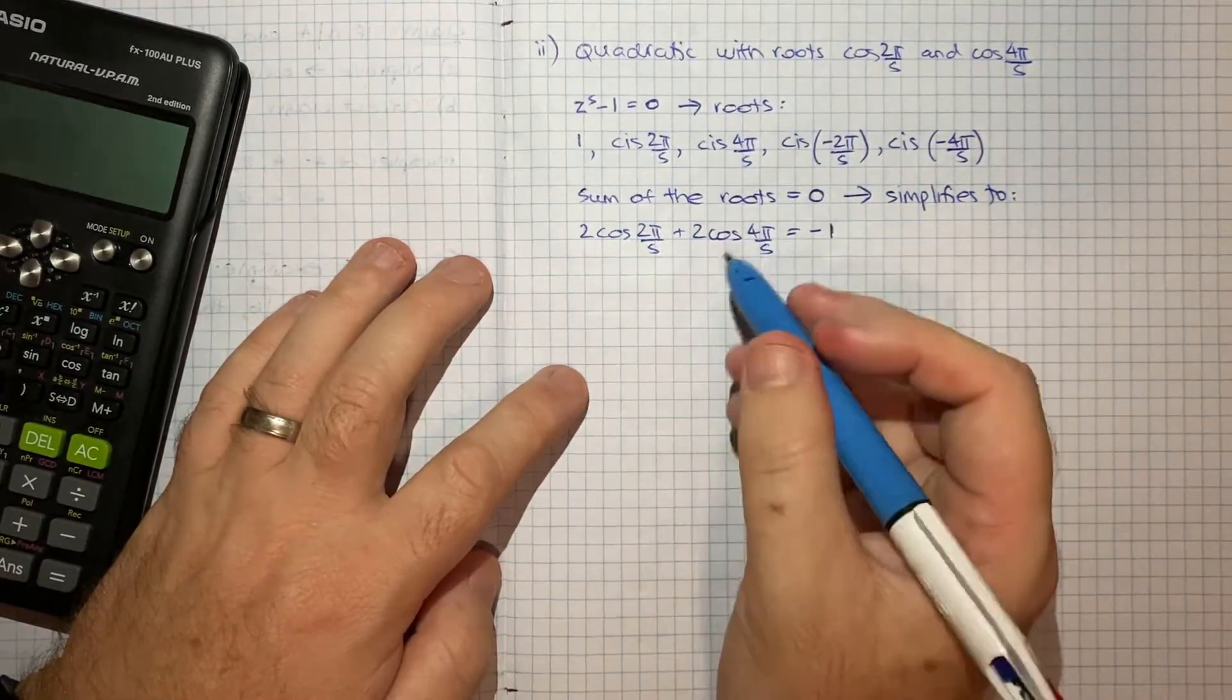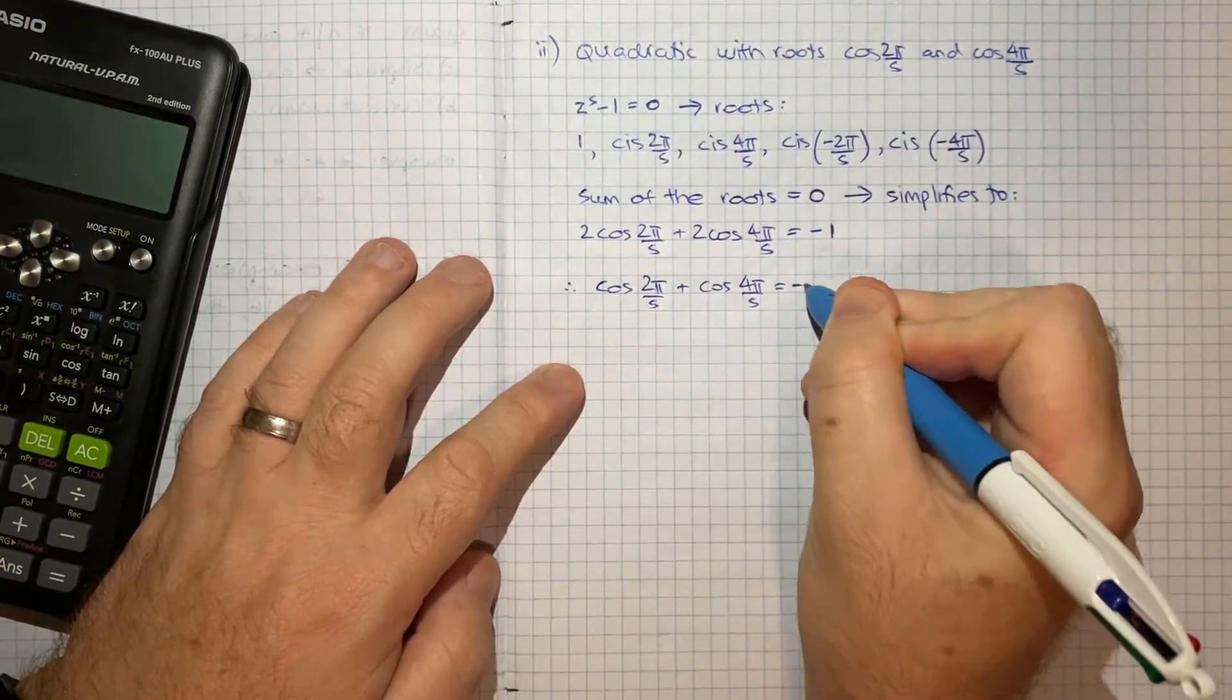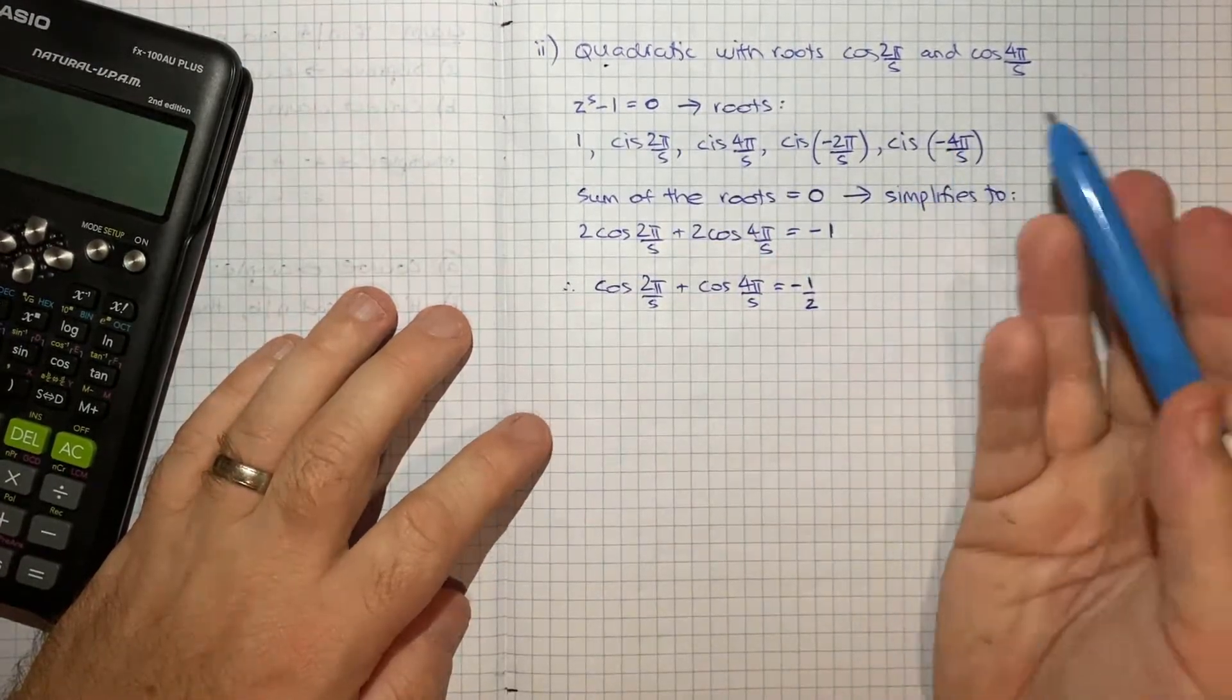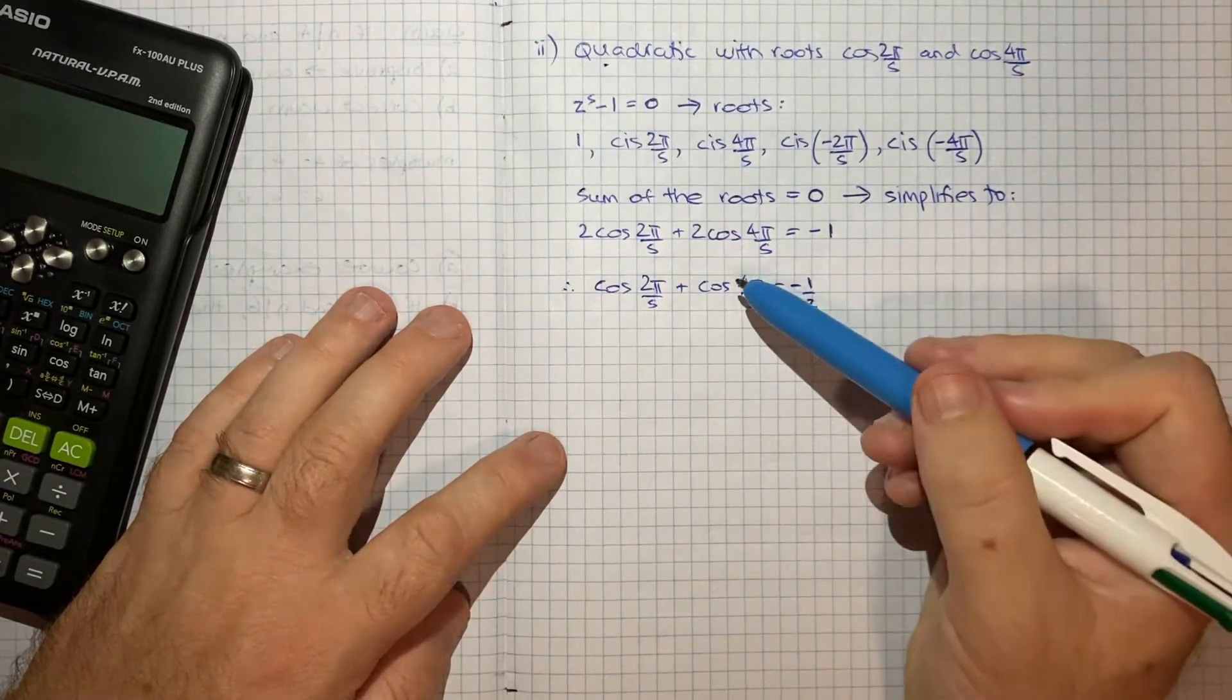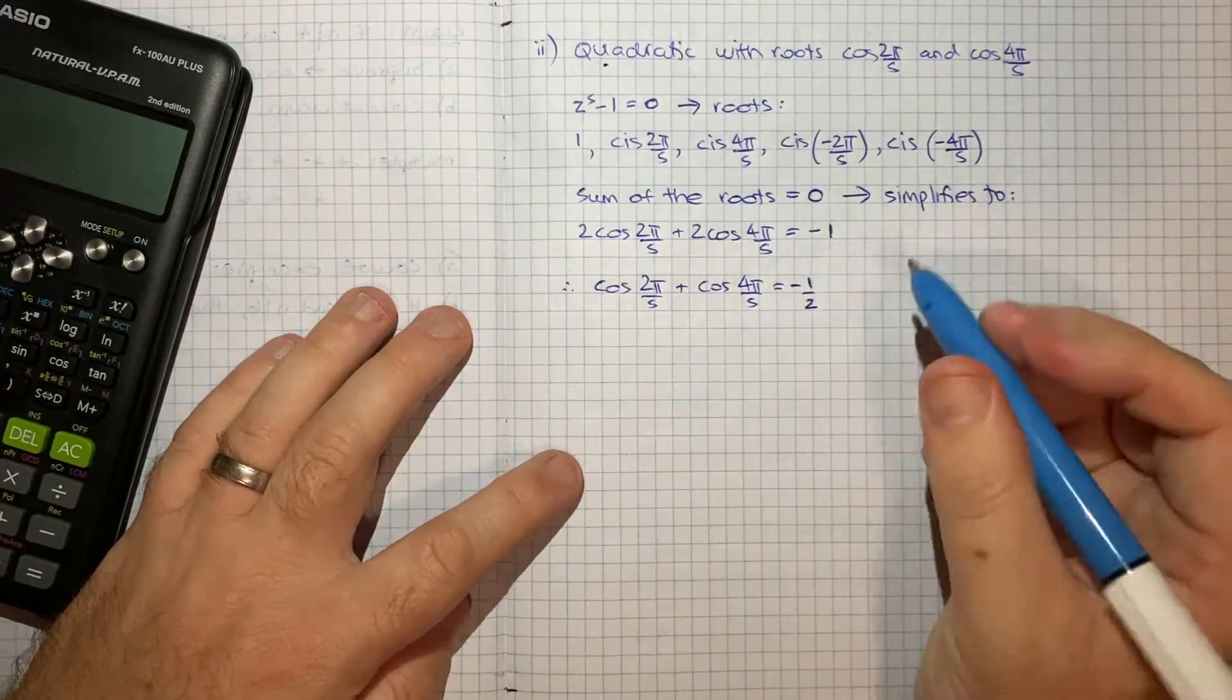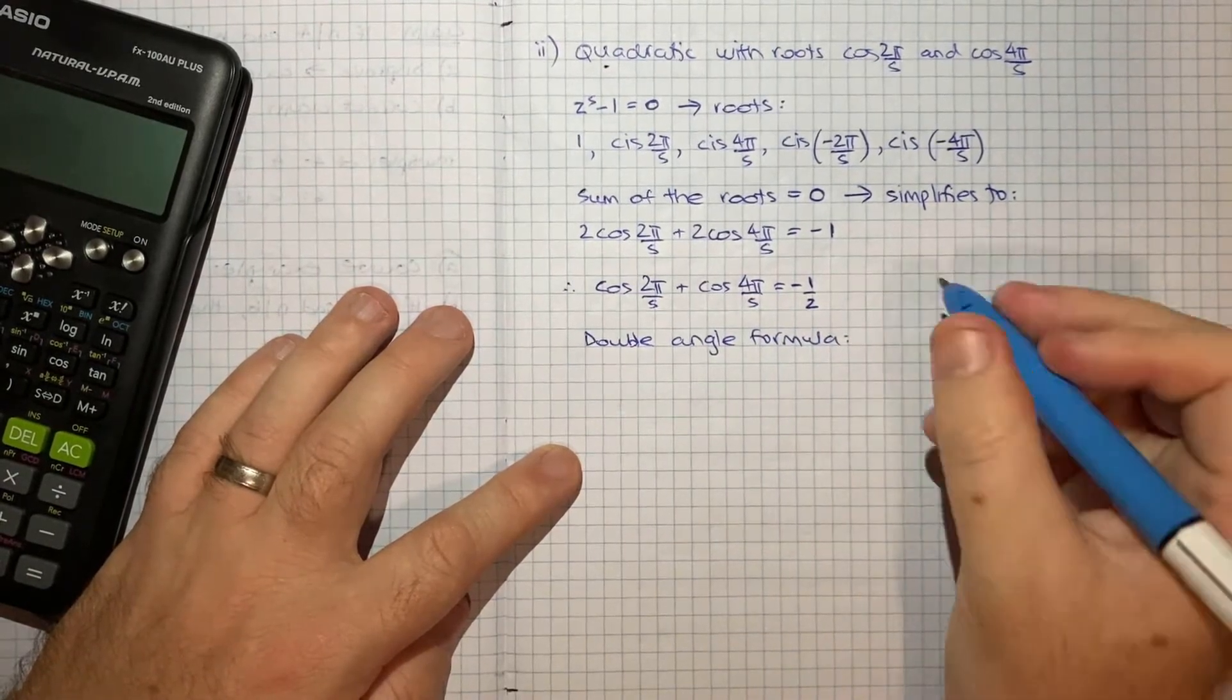So that's something you can go take a look at in my video for part one. It's really from this point that I'm going to pick up here and run with it for part two. So I'll just factor out this 2, so we can say that cos 2π/5 plus cos 4π/5 equals negative 1 half. Now really what we need to do to get a quadratic is we need something that's to the power of 2 here.